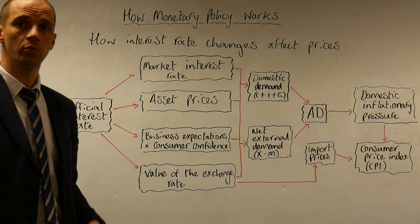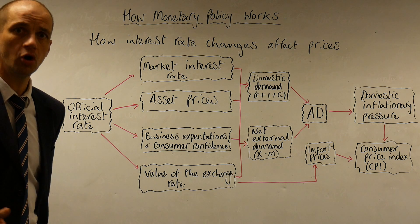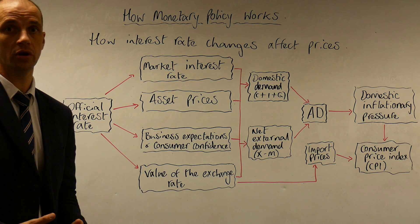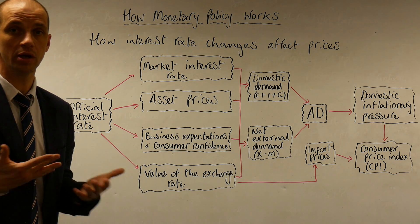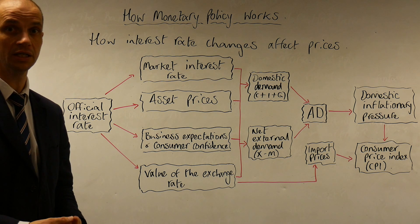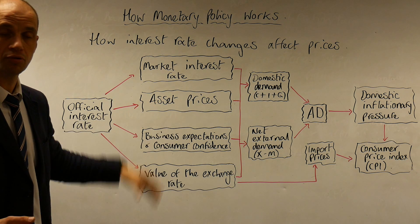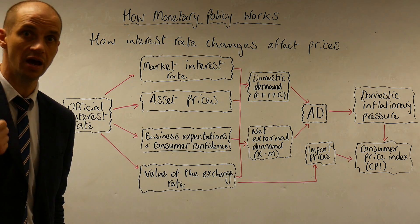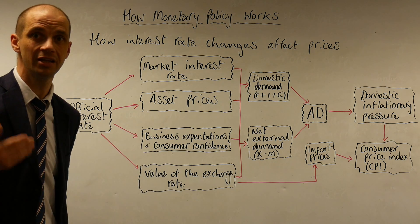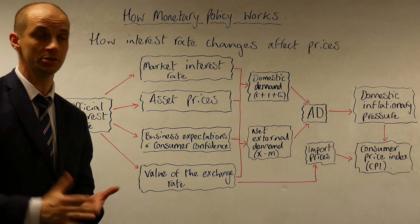Moving on to asset prices: if an interest rate change is unexpected by the market, you're likely to see a fall in the stock market as a whole, because there's greater incentive to save rather than consume, and therefore the potential for business profits is expected to decline. Asset prices may fall directly if there is an unexpected interest rate rise; if the market was expecting a rise and it doesn't happen, the stock market might actually go up in response.